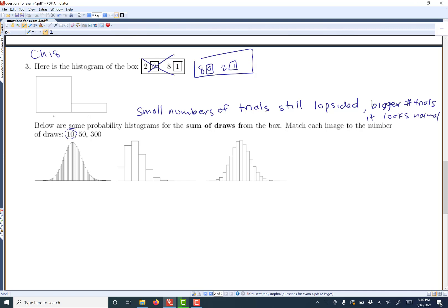Now when I say it, I mean the sum. So the possible sums will start looking normal when you do something lots of times. So no matter what your original box looks like, if you find the sum, then the distribution of all the possible sums will look normal.